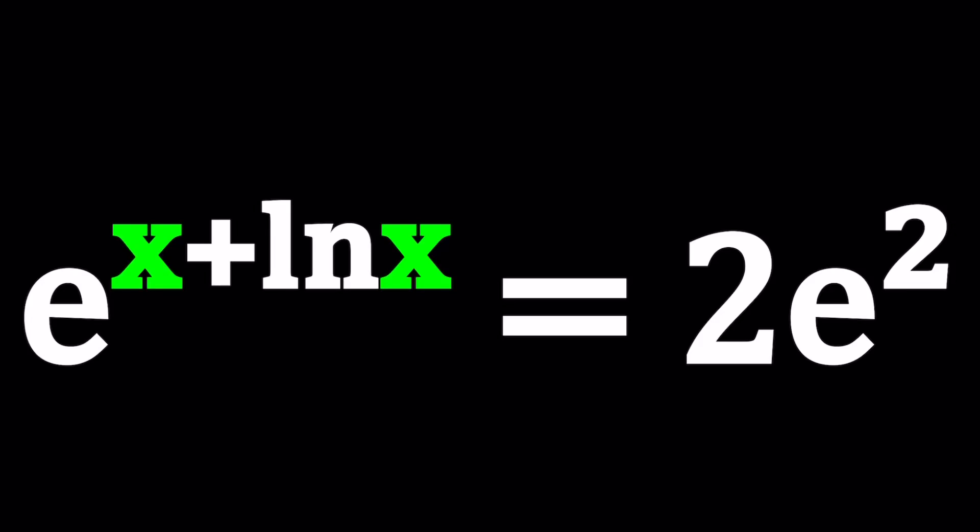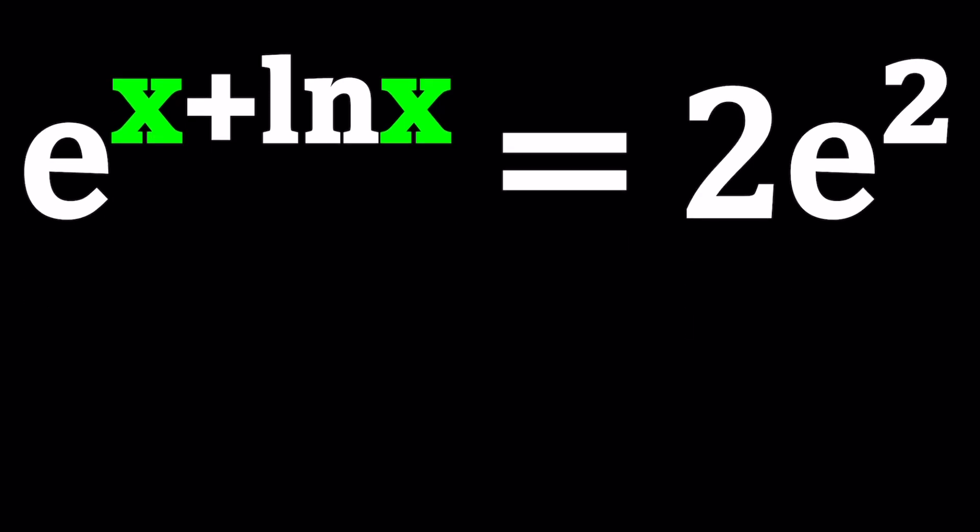Hello everyone. In this video, we're going to be solving a logarithmic, I mean an exponential, I mean both equation. We have e to the power x plus ln x equals 2e squared, and we're going to be solving for x. Now this kind of looks like a hard problem, doesn't it? How can a power of e equal 2 times another power of e? I'll be presenting two methods and let's start with the first one.